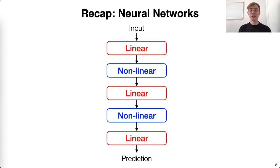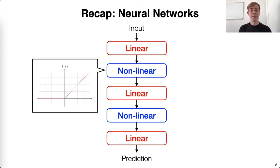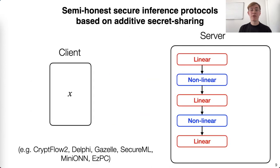To answer this, let's recall some basic facts about neural networks. At a high level, neural networks consist of alternating linear and non-linear layers, where the linear layers include convolution, matrix multiplication, pooling, etc. And the non-linear layers include activations like ReLU, which map negative inputs to zero and positive inputs to the identity. We note that non-linear layers make model extraction difficult, because without them, the network would simply be a linear system.